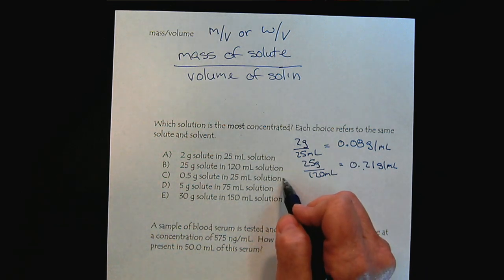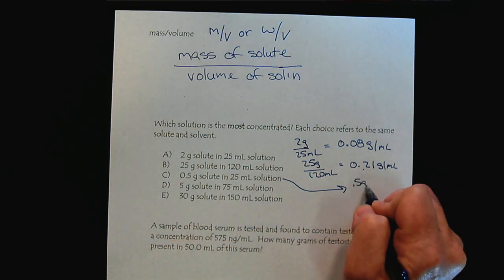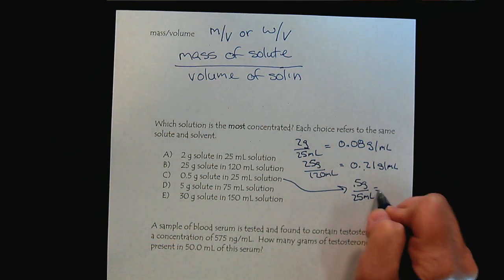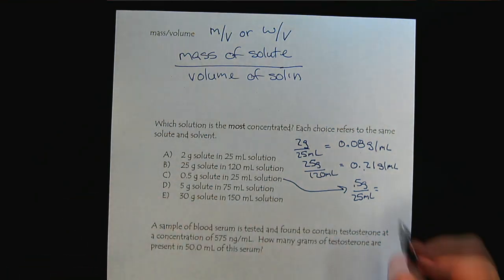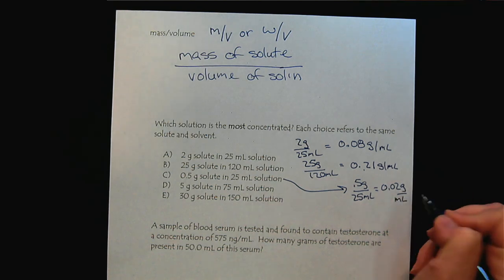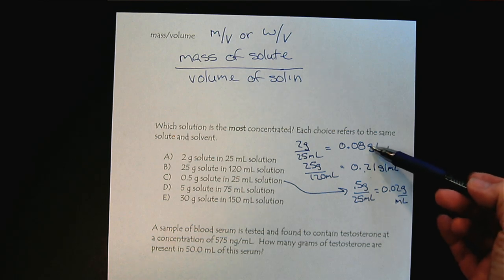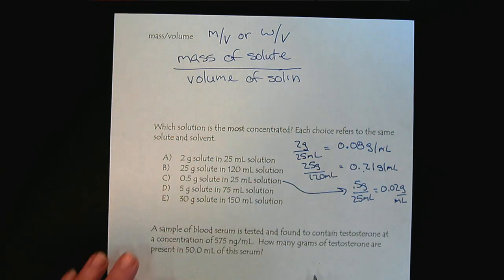Now let's look at solution C. We have 0.5 grams divided by 25 milliliters, which gives us 0.02 grams per milliliter. The important thing here is when we compare the various solutions, we have to make sure that we have the same mass and the same volume units to be able to compare the concentrations.